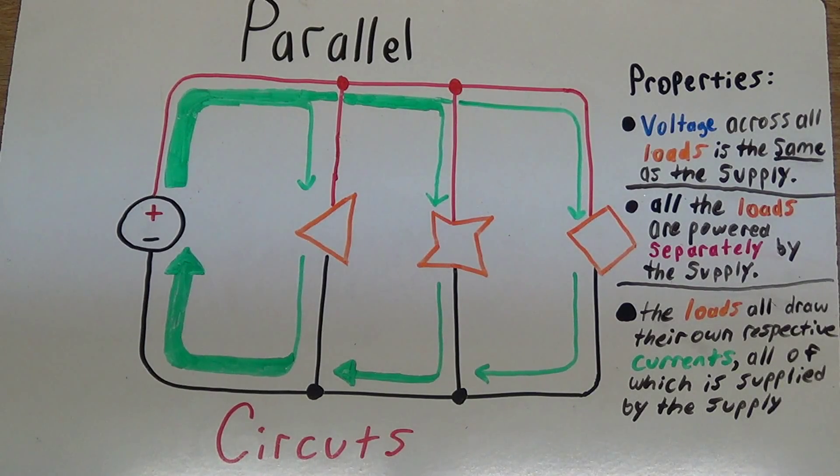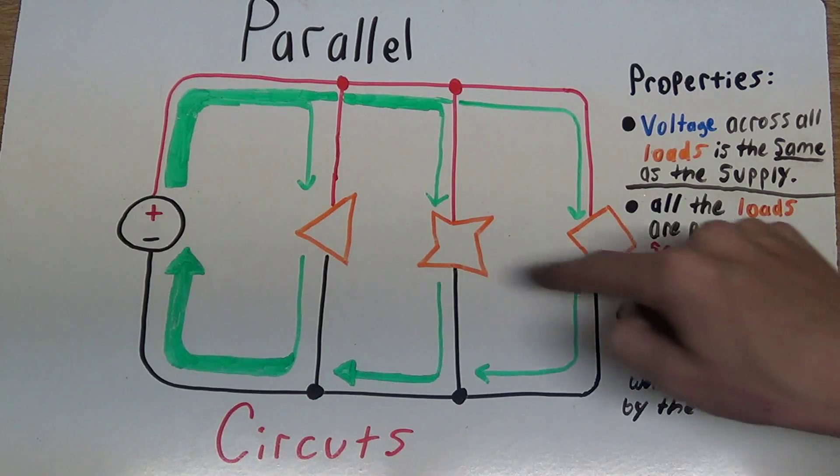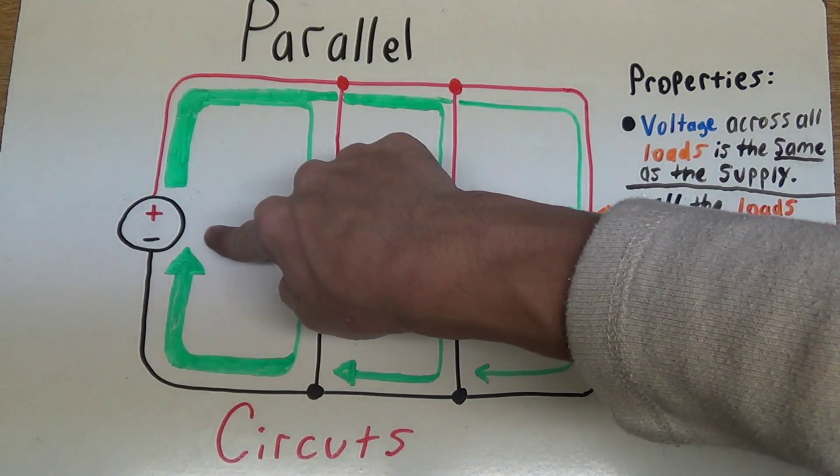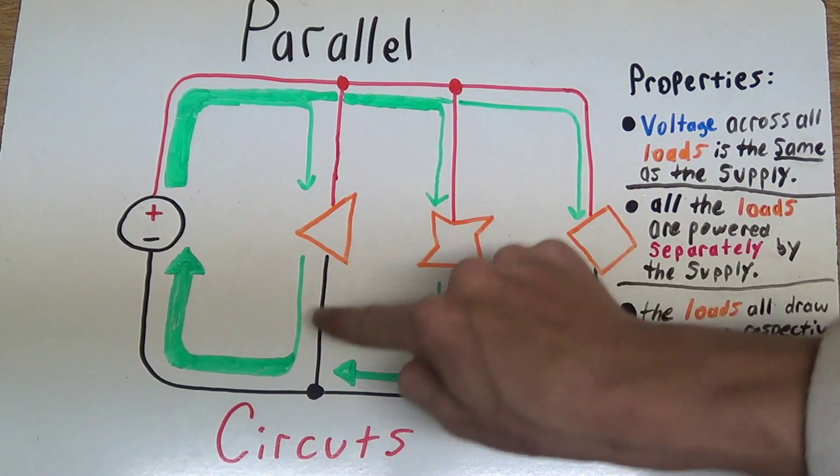Alright, now that we've covered simple and series circuits, let's go over parallel circuits. Now parallel circuits are actually the most common type of circuit to find in electronics, because the voltage across all the loads is the same as the supply. You can see I have all three of my loads here, and they all have the same voltage across them, and so they're all going to be drawing power individually.